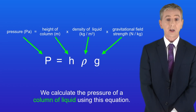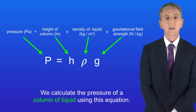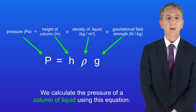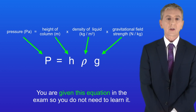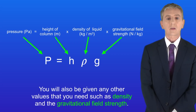We calculate the pressure of a column of liquid using this equation: the pressure in pascals equals the height of the column in meters, multiplied by the density of the liquid in kilograms per meter cubed, multiplied by the gravitational field strength. You are given this equation in the exam so you don't need to learn it. You'll also be given any other values that you need, such as density and gravitational field strength.